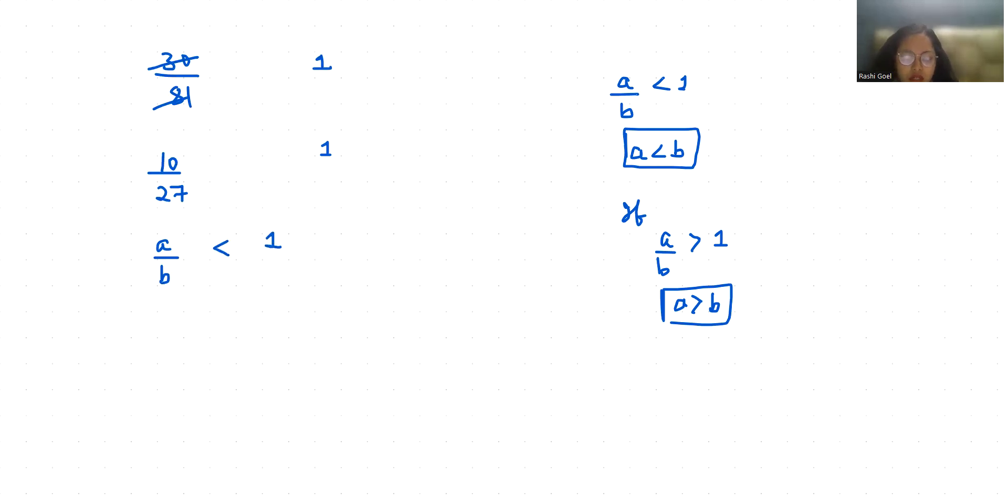So our a is less than b. That is, we can say that our left hand side 10 power 10 is smaller than 9 power 11.